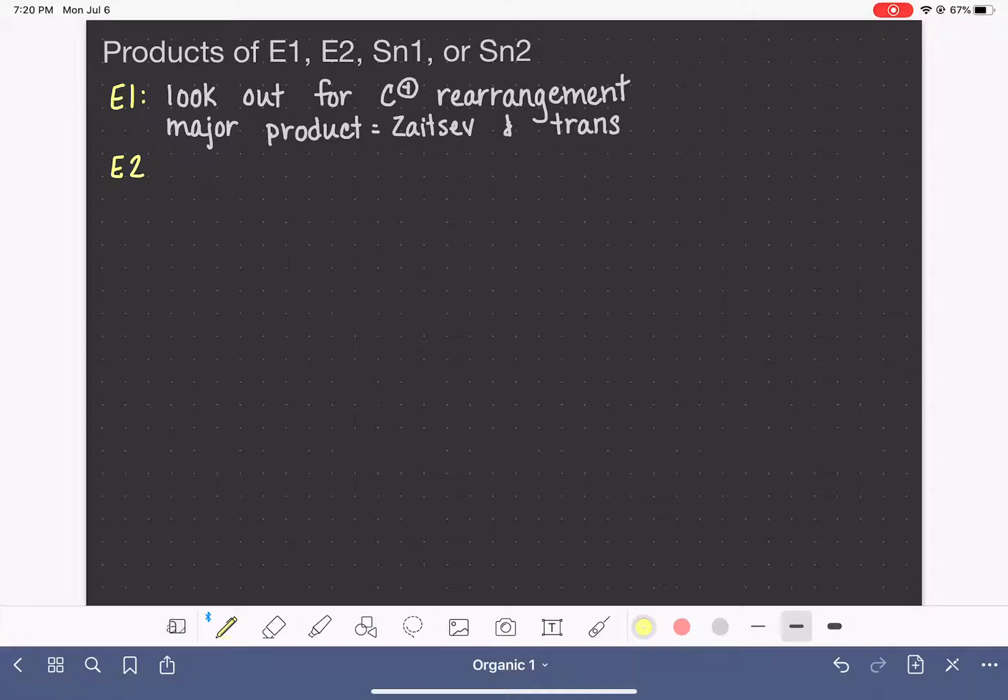E2 is a little bit trickier. For the E2 reaction, remember, we might need to worry about anti-coplanar. So check to see if you need to deal with anti-coplanar. That's going to apply if you're doing elimination between two chiral carbons or if you're dealing with elimination within a ring. You don't always have to worry about anti-coplanar configuration.